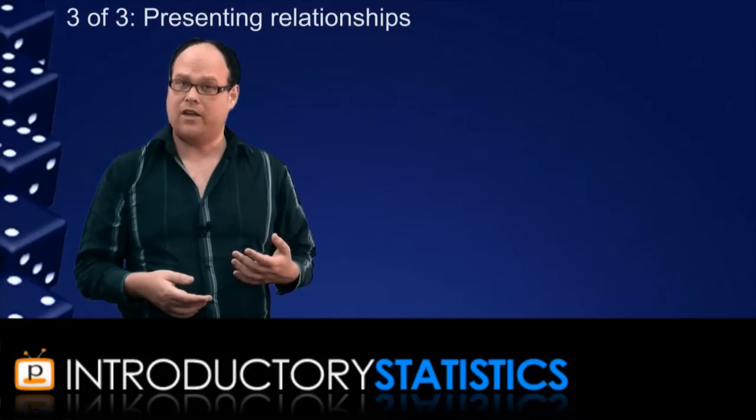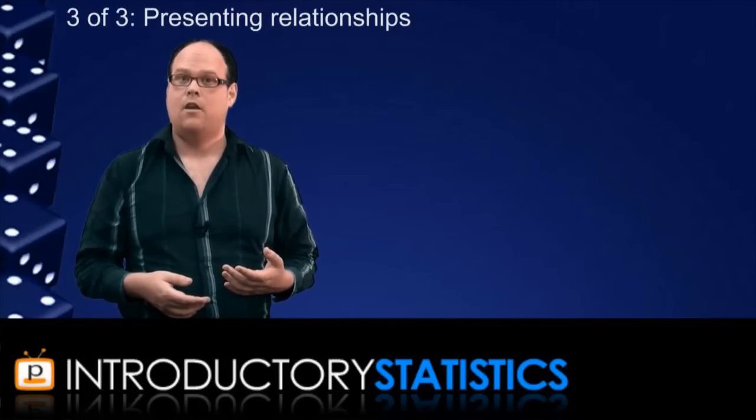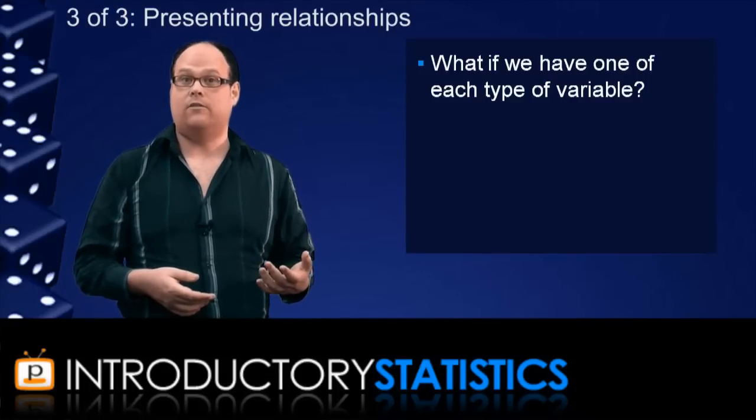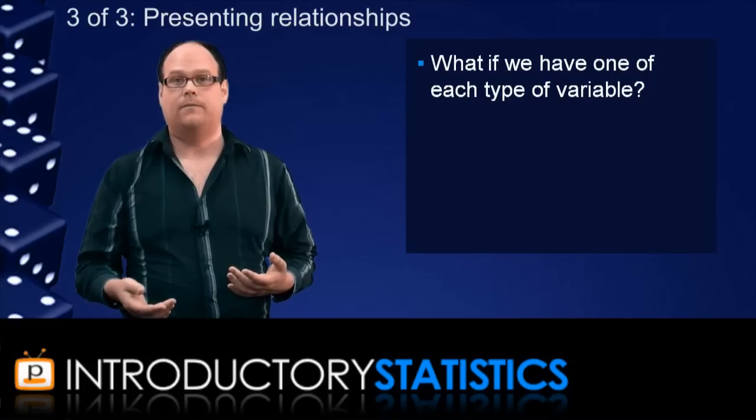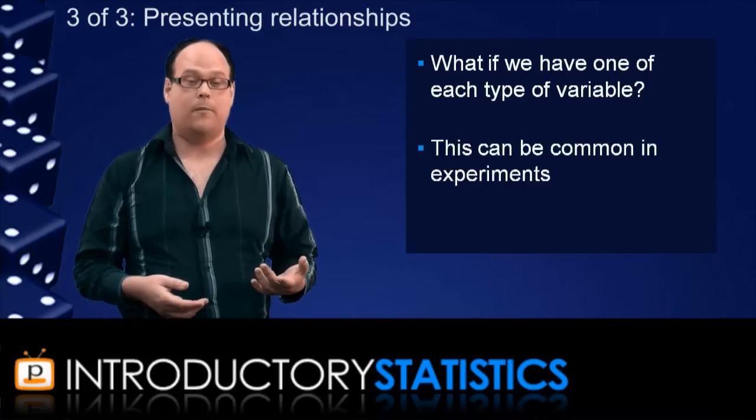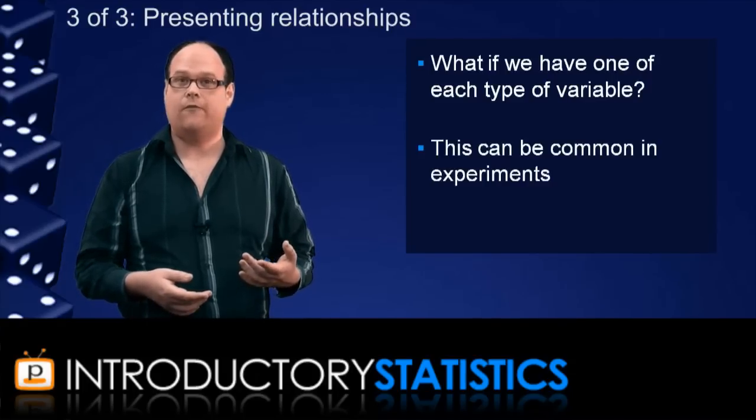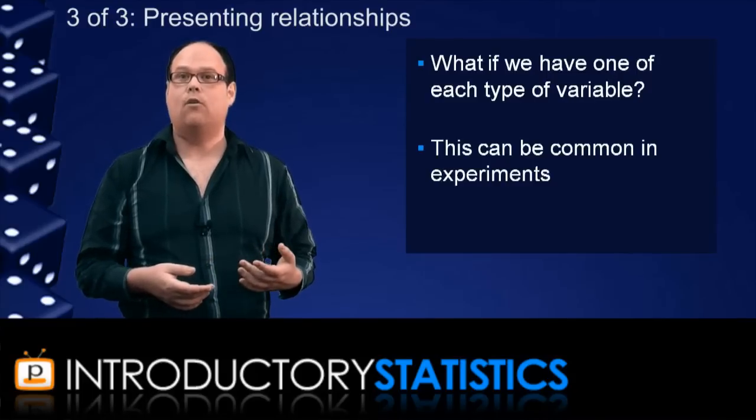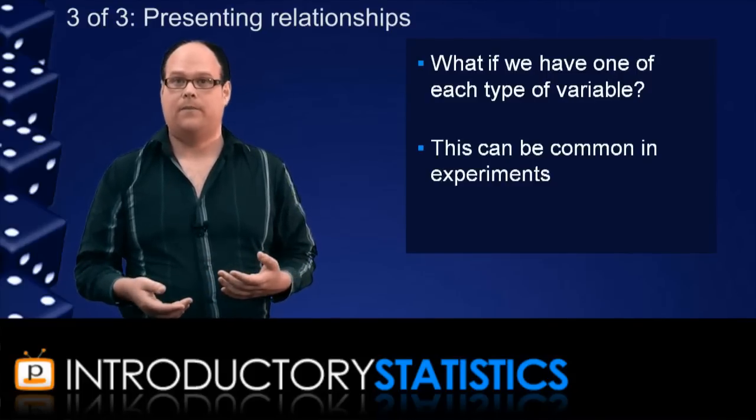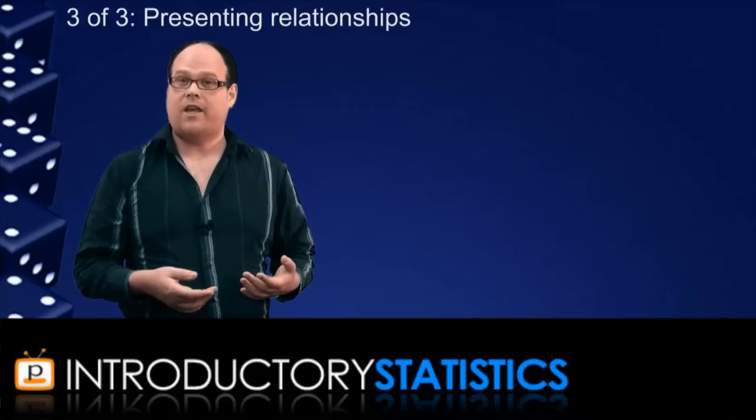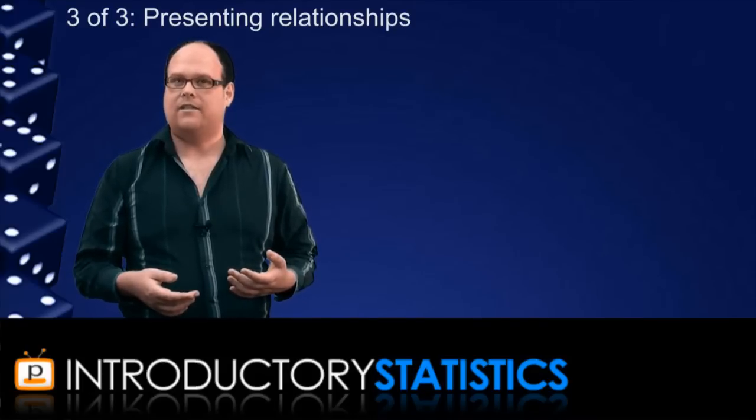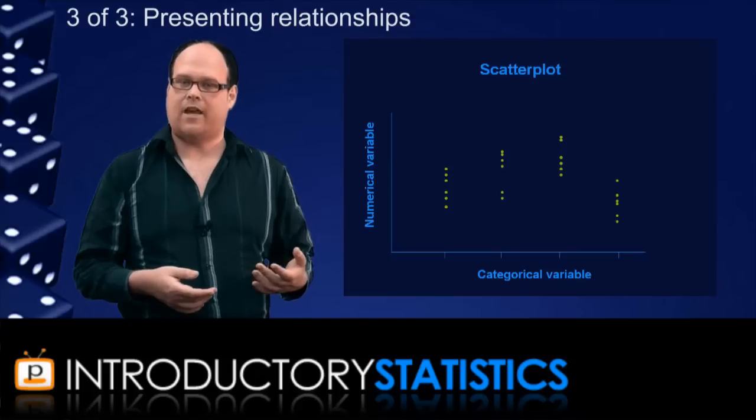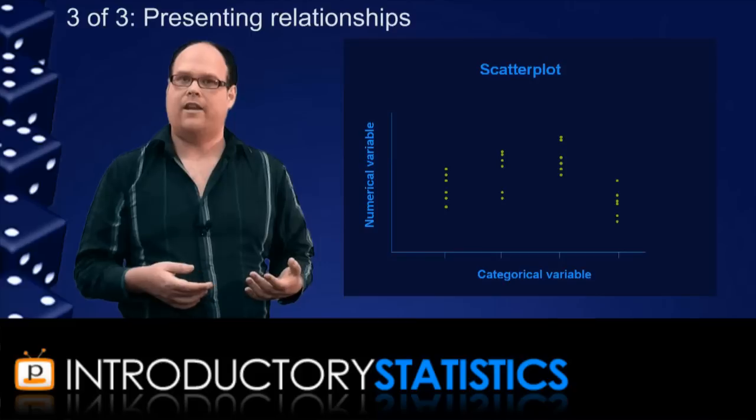So, that's the relationship between two numerical variables. What about if we have one numerical and one categorical variable? Well, this situation is quite common because in experiments you can often provide different levels of a categorical variable and then record the level of a numerical variable. In this case, we can still use scatter plots but they won't look exactly the same. Here's an example of a scatter plot showing the relationship between a numerical variable and a categorical variable.